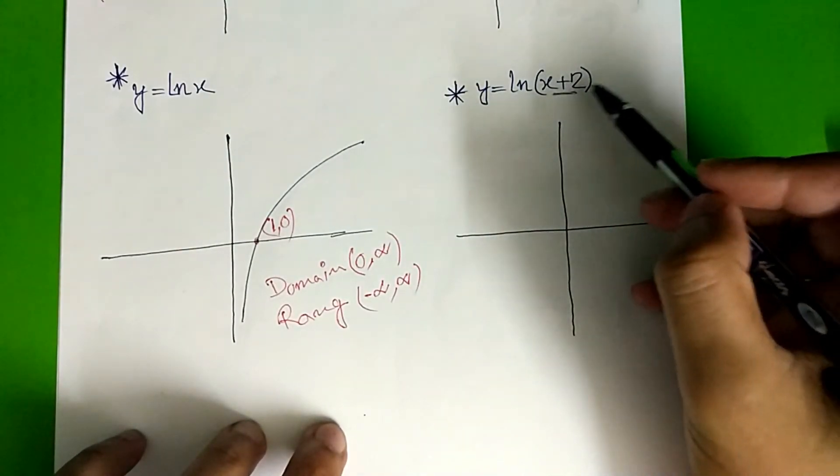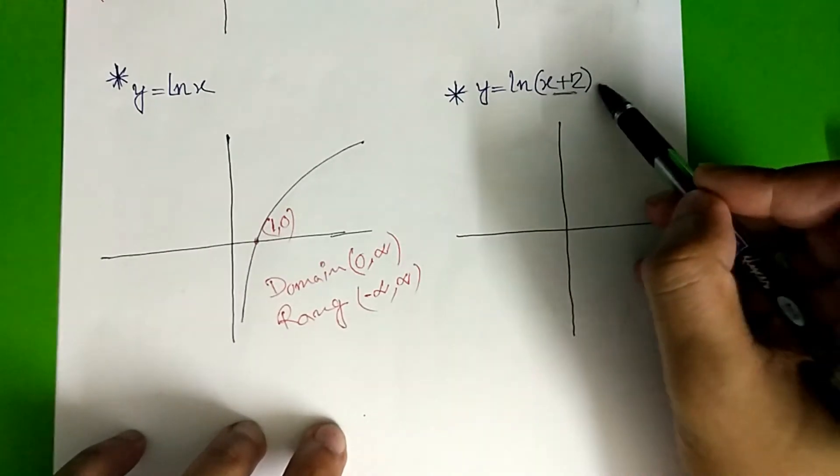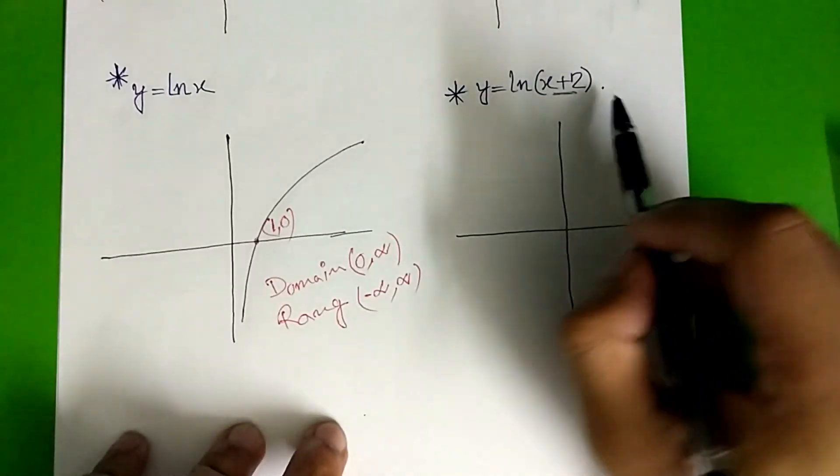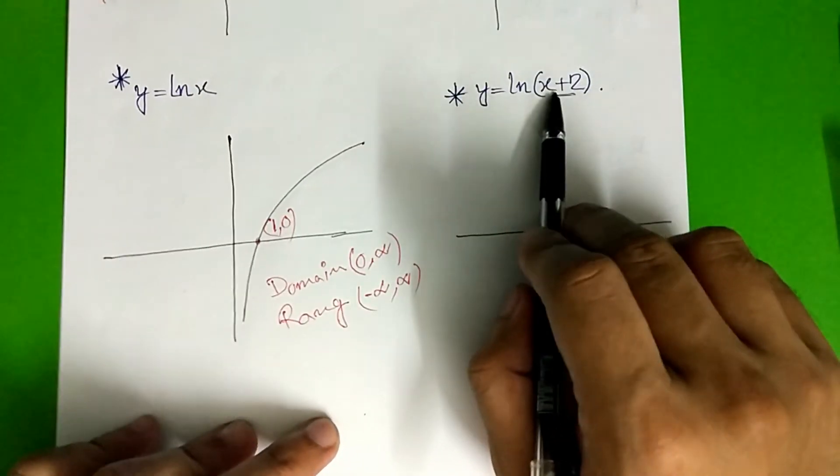This equation is the sketch. x is 2 plus 2. y is ln(x+2).